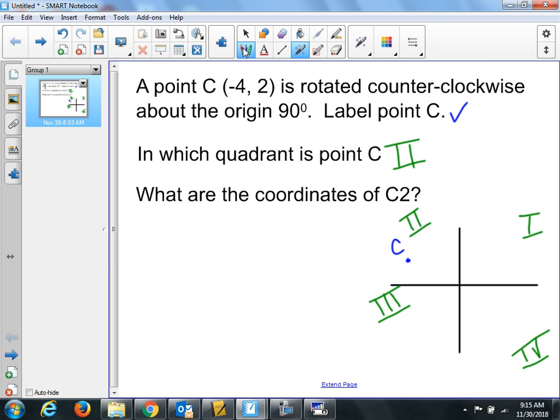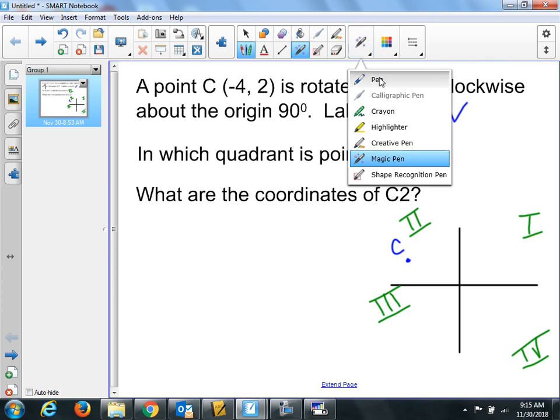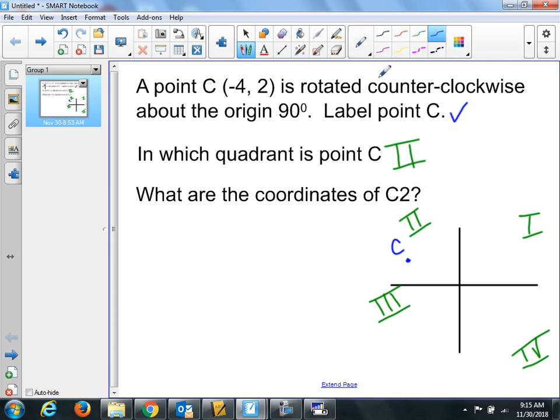So I'm going to draw in my new point C. Because this C was over negative four, this will be now standing up, so it will be up positive four. This is my C two.